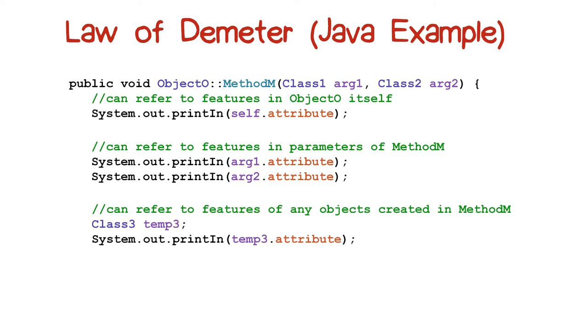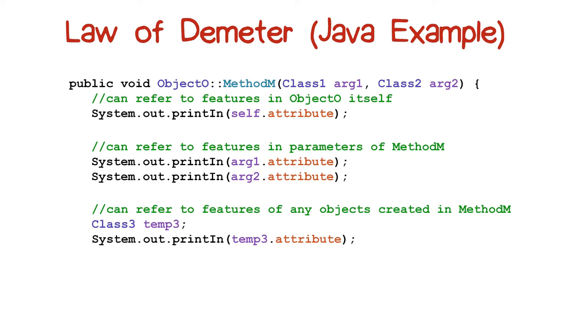And you can refer to object O's direct component objects, that is, its attributes. Obeying the Law of Demeter reduces coupling, but sometimes requires the introduction of extra wrapper classes.